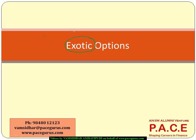In the world of options, wherever we use the word 'exotic,' we generally refer to the plain meaning — non-normal, non-standard. Those are the ones we call exotic products. The same thing, at least from a broad overall perspective, gets applied even to exotic options. In general, we have normal plain options like American or European options, which are typically categorized as plain vanilla options.